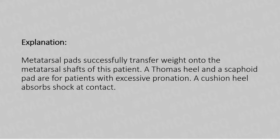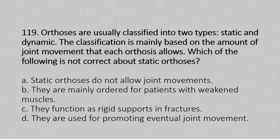Let's move to question number 119. Orthoses are usually classified into two types: static and dynamic. The classification is mainly based on the amount of joint movement that each orthosis allows. Which of the following is not correct about static orthoses? Option A: static orthoses do not allow joint movements. Option B: they are mainly ordered for patients with weakened muscles. Option C: they function as rigid support in fractures. Option D: they are used for promoting eventual joint movements.